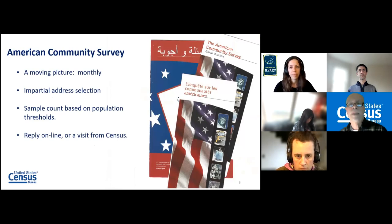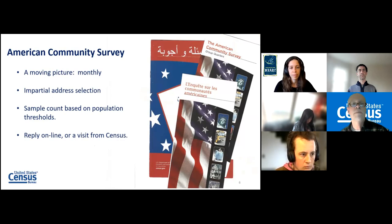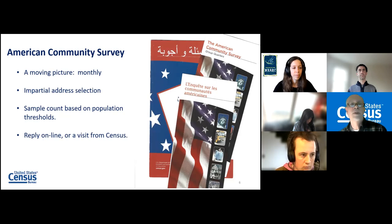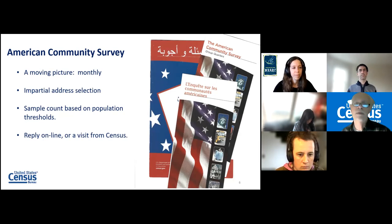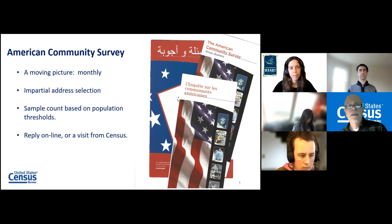That brings us to the American Community Survey, which is different. We administer this every month of every year — it did not stop even during the 10-year census. It's very impartial, built on an address list and an algorithm that selects addresses. We have no idea who's living there — we just go and get the interview. We do over-sample because some people won't give us an interview, but in general most people do, and we get about 99% of what we need.